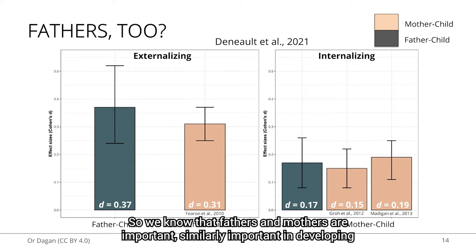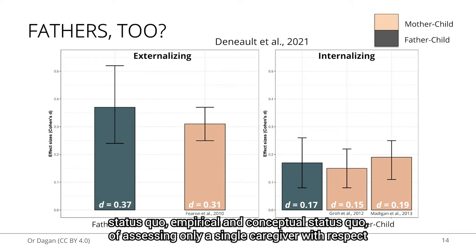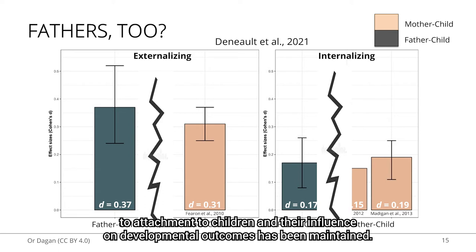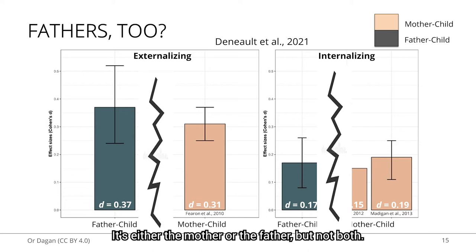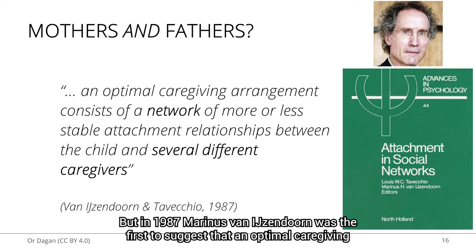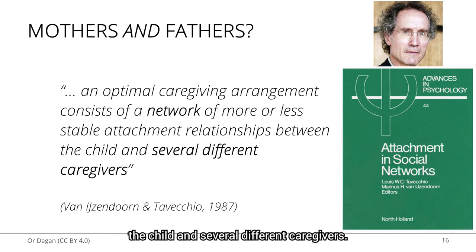Whereas monotropy has been extended and expanded by the independence hypothesis, the empirical and conceptual status quo of assessing only a single caregiver with respect to attachment has been maintained — it's either the mother or the father, but not both. But in 1987, Marinus van IJzendoorn was the first to suggest that an optimal caregiving arrangement consists of a network of more or less stable attachment relationships between the child and several different caregivers.